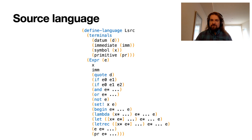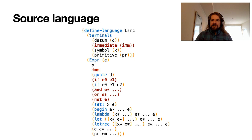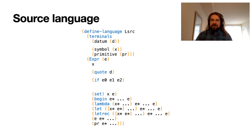As for our expression language, we have variable references, immediates, quoted datums, one-arm and two-arm if, and, or, not, set!, begin, lambda, let, letrec, and two different call syntaxes — one for calling functions defined in the language, one for calling primitives. We do this so we don't have primitives as free-floating expressions that students would have to convert into a lambda expression. We're going to use an initial parser to eliminate immediates, get rid of our one-armed if, and turn and, or, and not into combinations of ifs and let bindings, which is needed for the or case.